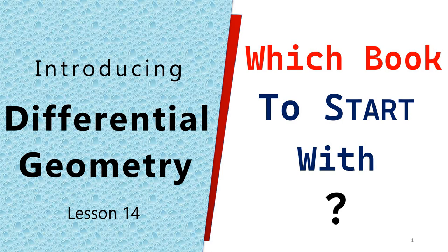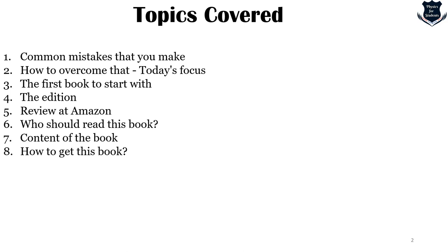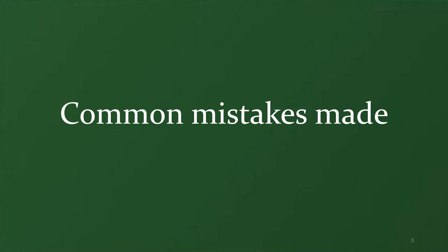We will first learn what are the mistakes that we make, because until we recognize them we will continue making these mistakes forever and fall into a loop. How to overcome the mistakes — that would be today's focus. The very first book to start with, what edition you should select, what are the reviews published on Amazon about that book, who should read this book — the target audience — what is the content of the book, and importantly how to get this book. I am making this video after going through at least 20 to 25 books on differential geometry, and that is how I have come to recommend this book. Be very careful in understanding which book you select when studying for the first time.